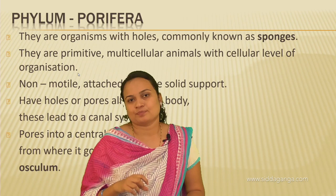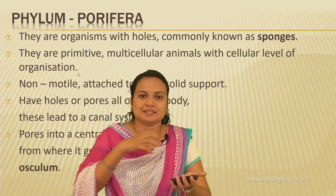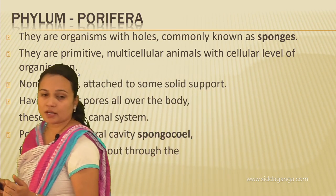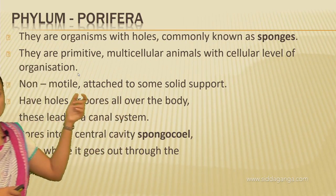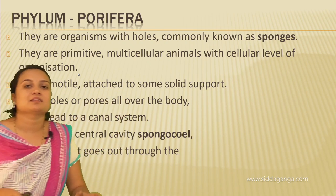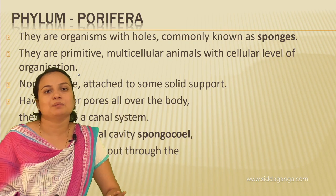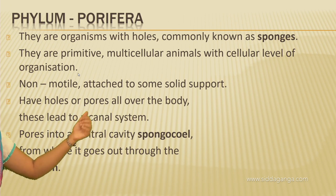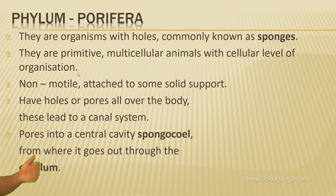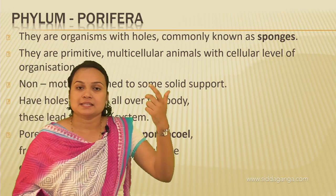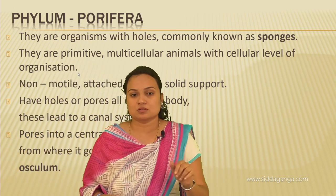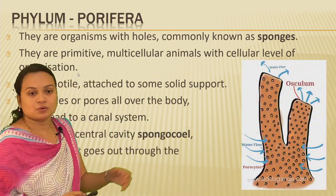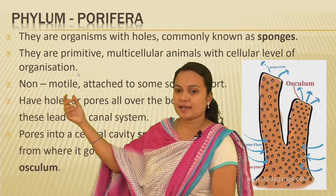Inside the Porifera, there is the spongocoel — the central cavity. These animals are covered with a hard outer layer or exoskeleton made up of spongin fibers. These spongin fibers give mechanical strength and make up the structure of the organism, since Porifera are very primitive and don't have any modified or advanced structures.